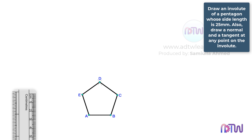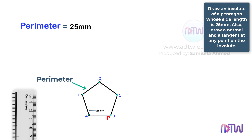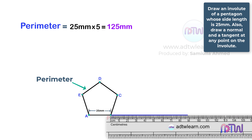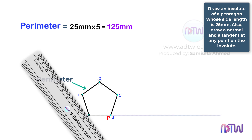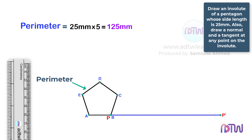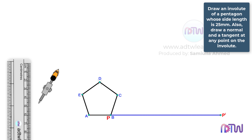We will consider the endpoint of the rope to be here, and label this point as P. After this, we need to draw a line whose length should be equal to the perimeter of the pentagon. The perimeter of the pentagon is equal to 25 mm multiplied by the number of sides, which is 5, giving 125 mm. Draw a line of 125 mm and label this endpoint as P-. After this, take a compass, adjust it to length A-B, and cut arcs on this horizontal line.